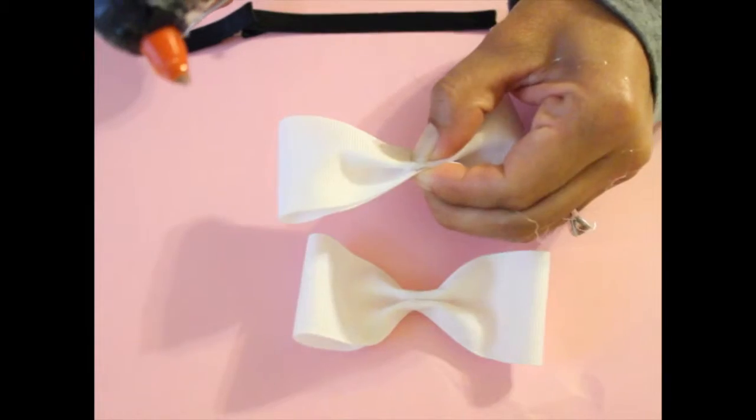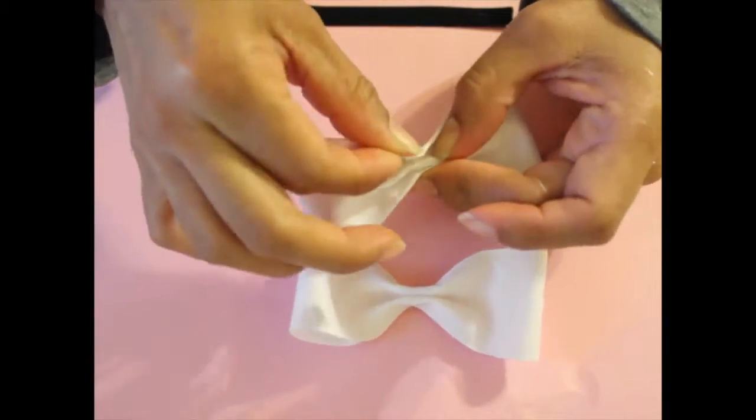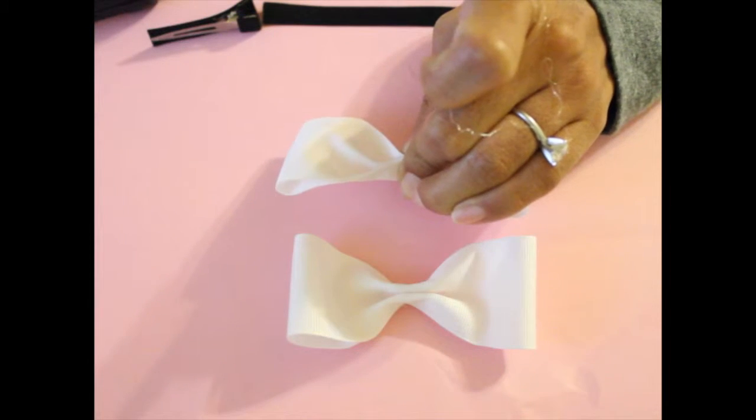So fold it back and fold this piece back towards the center again. Now you have both pieces done and you're ready to assemble your hair bow.